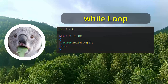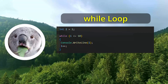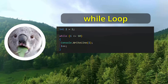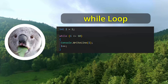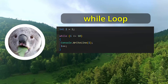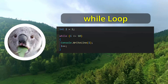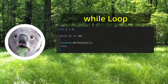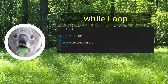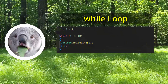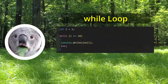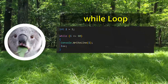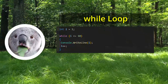Now let's move on to loops. The first type of loop we will look at is the while loop. The while loop allows you to execute a block of code repeatedly as long as a certain condition is met. For example, you can use a while loop to print the numbers from 1 to 10. In the example shown on screen, the while loop will continue to run and print the numbers 1 to 10 as long as the variable i is less than or equal to 10.